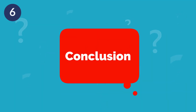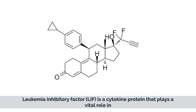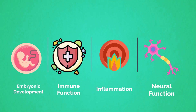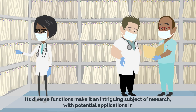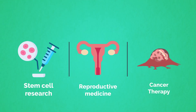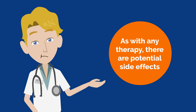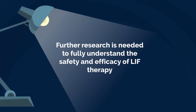In conclusion, Leukemia Inhibitory Factor, LIF, is a cytokine protein that plays a vital role in embryonic development, immune function, inflammation, and neural function. Its diverse functions make it an intriguing subject of research, with potential applications in stem cell research, reproductive medicine, and cancer therapy. As with any therapy, there are potential side effects, and further research is needed to fully understand the safety and efficacy of LIF therapy.